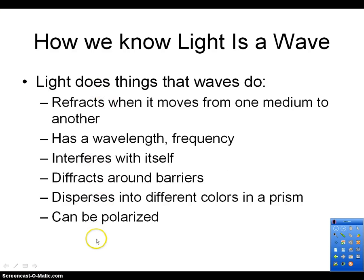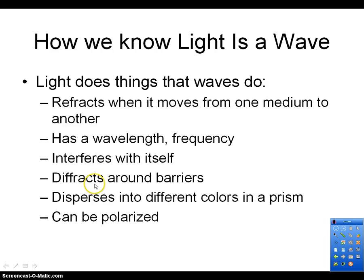There are several things that tell us light is a wave. One is that it refracts — it changes direction going from one material to another; a particle would have no reason to do this. It also has a wavelength and frequency, which are wave properties. It interferes with itself — particles can't interfere; two particles in the same place just bump each other out of the way, but waves can coexist. Light also bends around barriers, which is called diffraction — a particle won't do that. And light is broken up into different colors by a prism — a particle wouldn't break into different pieces going through a prism.